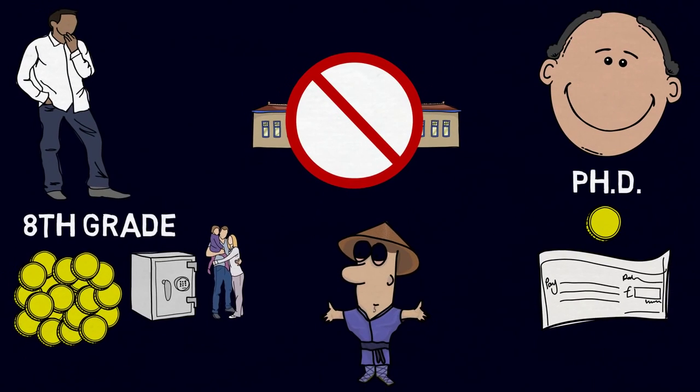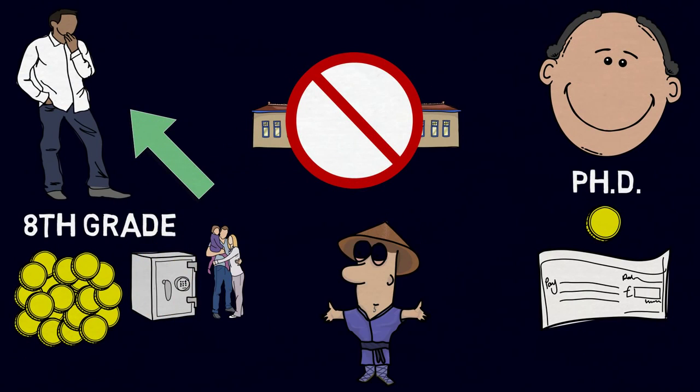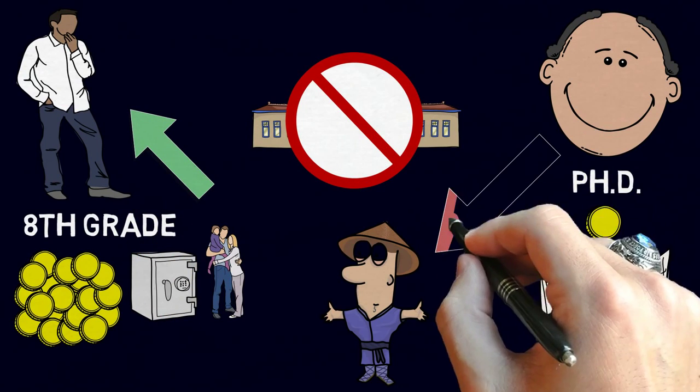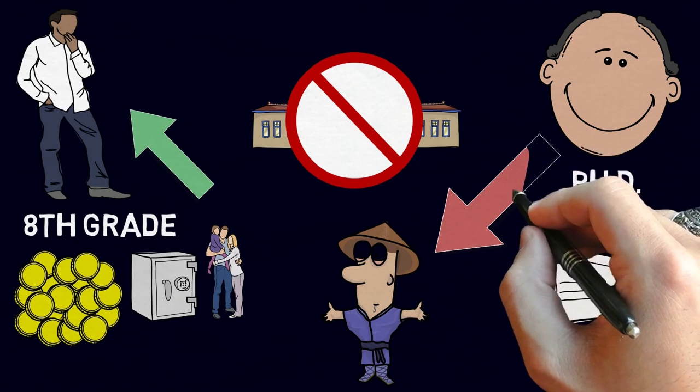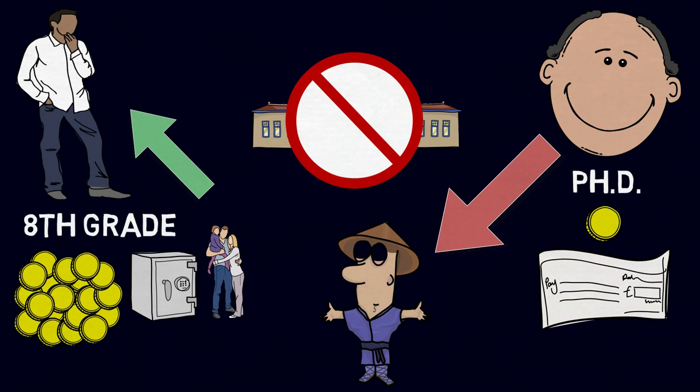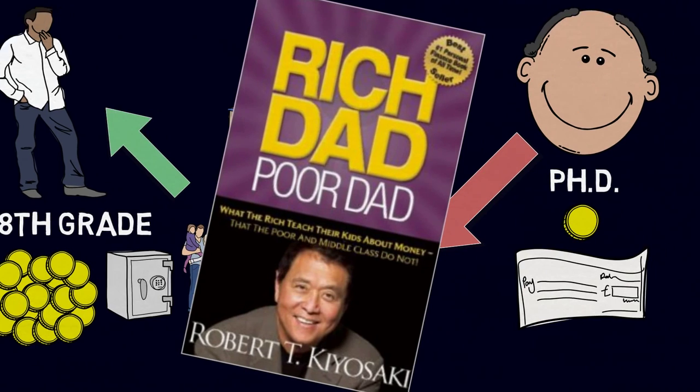Now the problem with this is that unless your parents are in the top 1%, they are going to teach you how to be poor. Not because they don't love you, they just don't know what they're teaching and they don't read books like Rich Dad, Poor Dad.